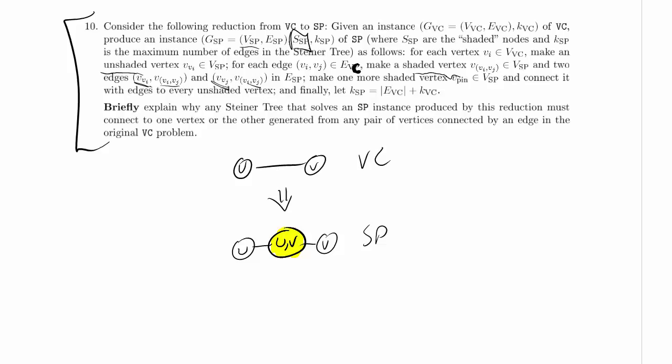And then additionally, we make one more shaded vertex pin. So there's going to be one shaded vertex. I'm going to draw it off to the side here to emphasize that pin is not part of the gadget for each edge. It's a whole separate vertex, and there will be one of them for all of the edges.